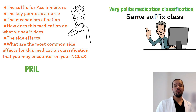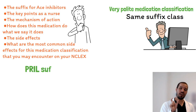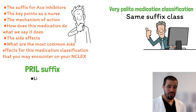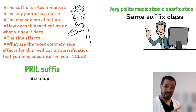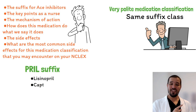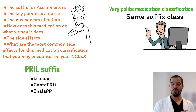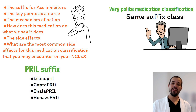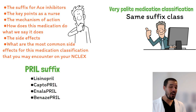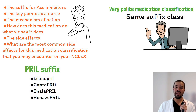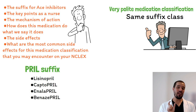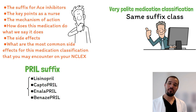ACE inhibitors all share the PRIL suffix. Examples include lisinopril, captopril, enalapril, and benazepril — all of them end in PRIL. If you can identify PRIL as an ACE inhibitor, you can make the knowledge correlation to its side effects as well as its mechanism of action.